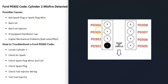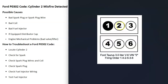Different cylinders will give you different codes. For example, a P0301 would be cylinder number one and a P0302 would be cylinder number two. So the first thing to do is locate cylinder two on your particular Ford, because that's the cylinder having the issue and the one that needs to be checked out.